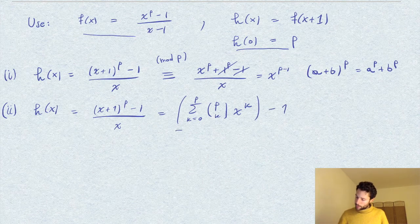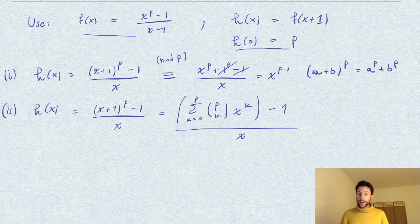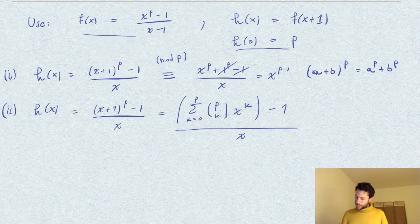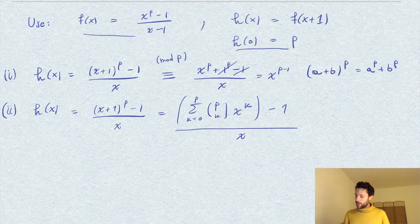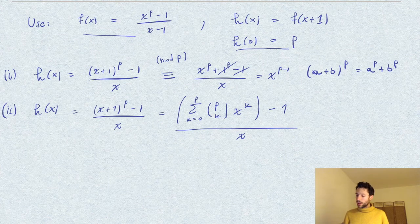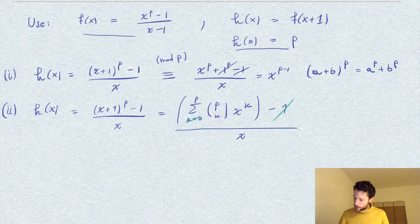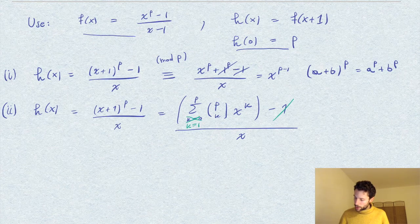So here you see that in this sum, the term when k is equal to zero is just one, so the first term gets deleted with this one, and I can just start the sum by one.